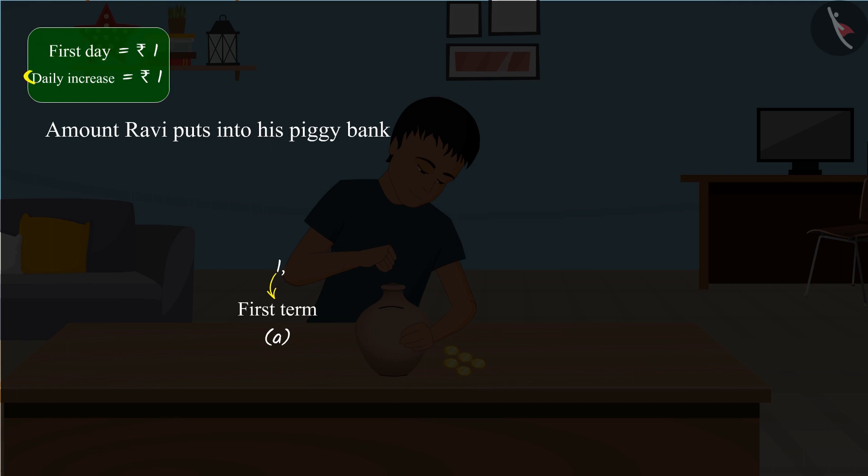Because Ravi increases the amount by 1 rupee per day, he will put 1 plus 1 equal to 2 rupees in the piggy bank the next day. Going forward in the same manner, we will get an arithmetic progression, which represents the money Ravi puts into his piggy bank every day.